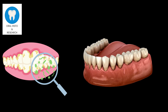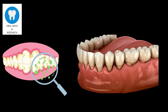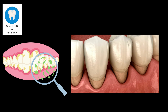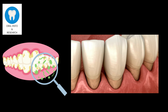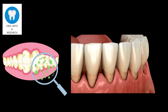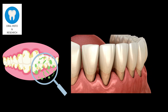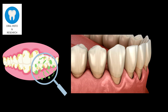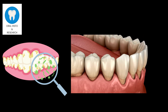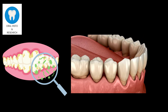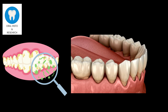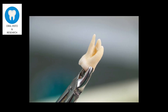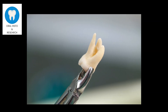Periodontitis is a severe gum infection that damages the soft tissue and destroys the bone supporting teeth. It typically starts with inflammation of the gums, gingivitis, caused by plaque buildup. If left untreated, it progresses to periodontitis, leading to irreversible damage to the gums and bones surrounding the teeth, ultimately resulting in tooth loss.